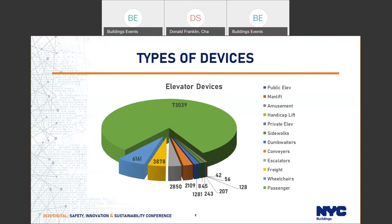This gives us a nice visual breakdown of the devices under our jurisdiction. As you can see from this pie chart, everything that moves up, down, or sideways is under our jurisdiction, as seen from the long list on the right. Passenger elevators in green are the highest number and also the focus of our discussion today for some of the retroactive requirements.